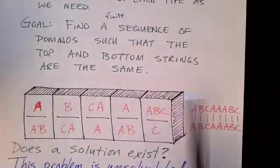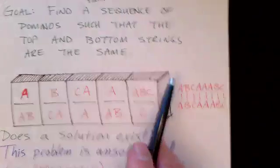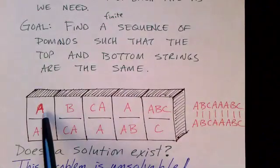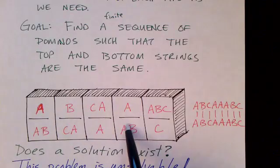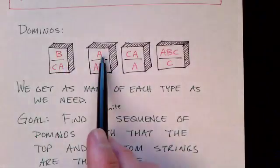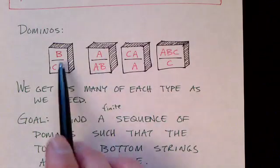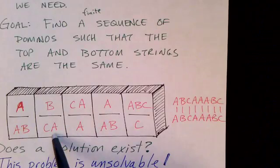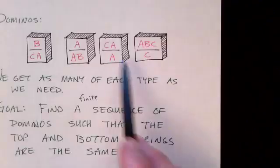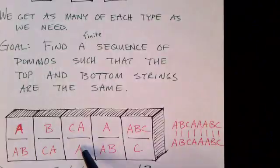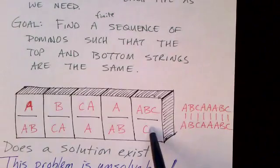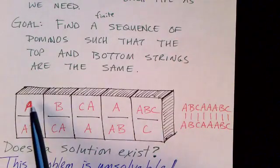Here's a solution. Notice that we're using the A over AB tile twice. We also have a B over CA tile that we're using just once, and we're using the CA over A tile here, and then the last tile in the last position. So is this a solution?